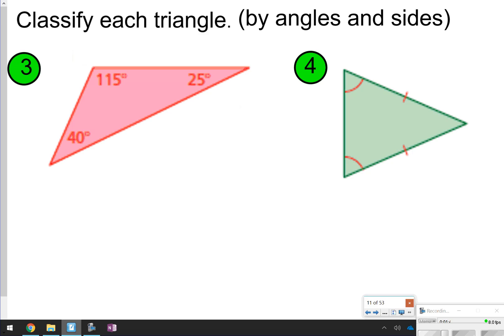You're going to classify each triangle by the angles and the sides. The first word you're going to use is going to represent the angles. So what type of angle, and then the second word you would use represents the sides. Go ahead and try that by pausing the video, and once you're done, click play to check your work.